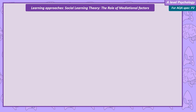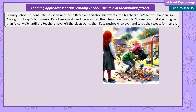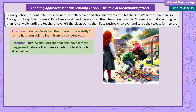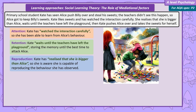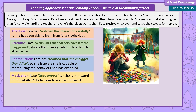Application questions on mediational processes are fairly common, so let's think about an example. Primary school student Katie has seen Alice push Billy over and steal his sweets. The teachers didn't see this happen, so Alice got to keep Billy's sweets. Kate paid attention — she saw Alice take Billy's sweets. She then retains this information: I've just seen how Alice got Billy's sweets by pushing him over. Reproduction: Kate thinks, I'm bigger than Alice, I could push her over. Motivation: Kate likes sweets. So she goes over, pushes Alice over, and takes her sweets. She's been taught that sharing is kind, so she offers some of her new sweets to Billy — but not the good ones.